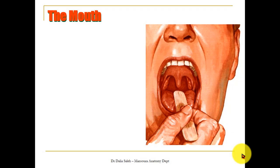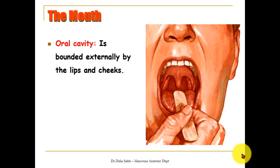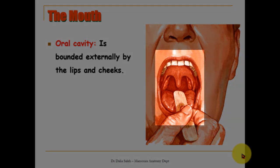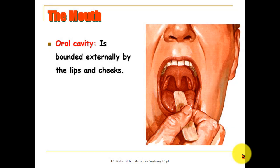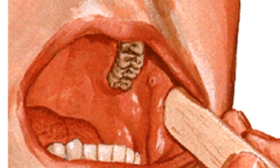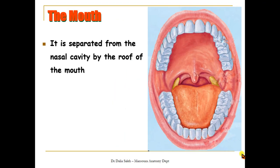Starting with the mouth, there are two parts: the oral cavity, which is bounded externally by the lips and cheeks, and another space called the vestibule — a pocket between the lips or cheeks and the teeth. The mouth is separated from the nasal cavity by the roof of the mouth, which is called the palate.